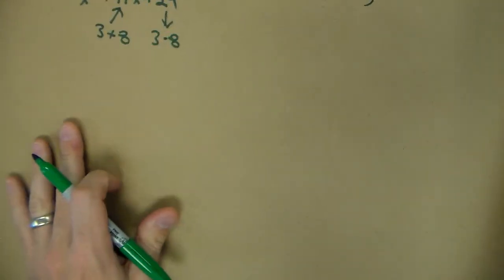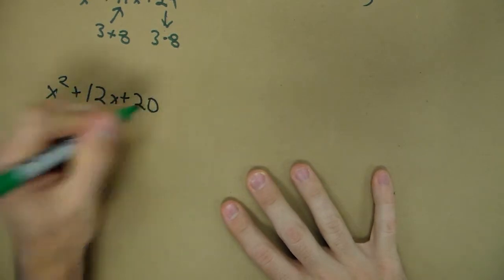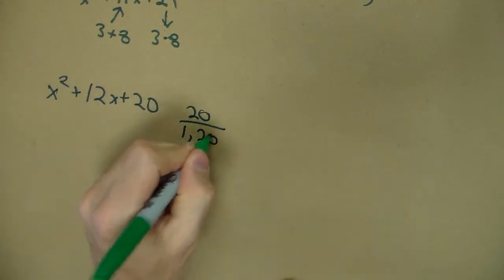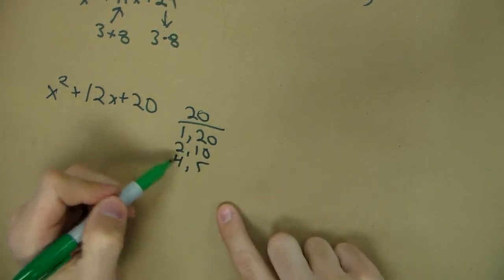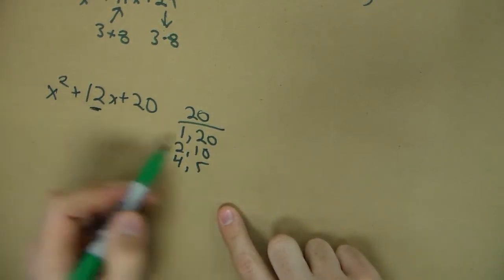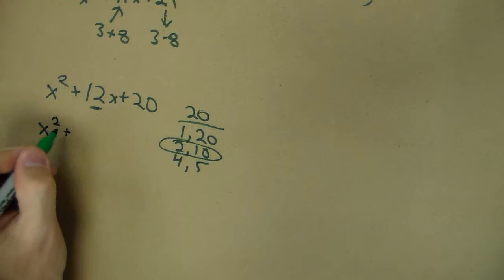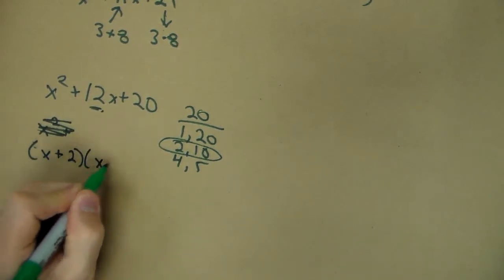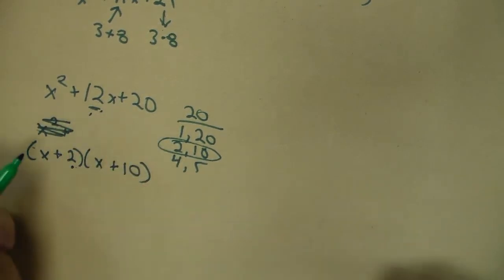Now if we looked at something like x² + 12x + 20, I'm thinking all right, factors of 20: 1 and 20, 2 and 10, 4 and 5. Now I'm looking for the one that adds to be 12. Well, 2 plus 10 is 12, so we could go (x+2)(x+10) as our factors. Product of 20, sum of 12, we're good.